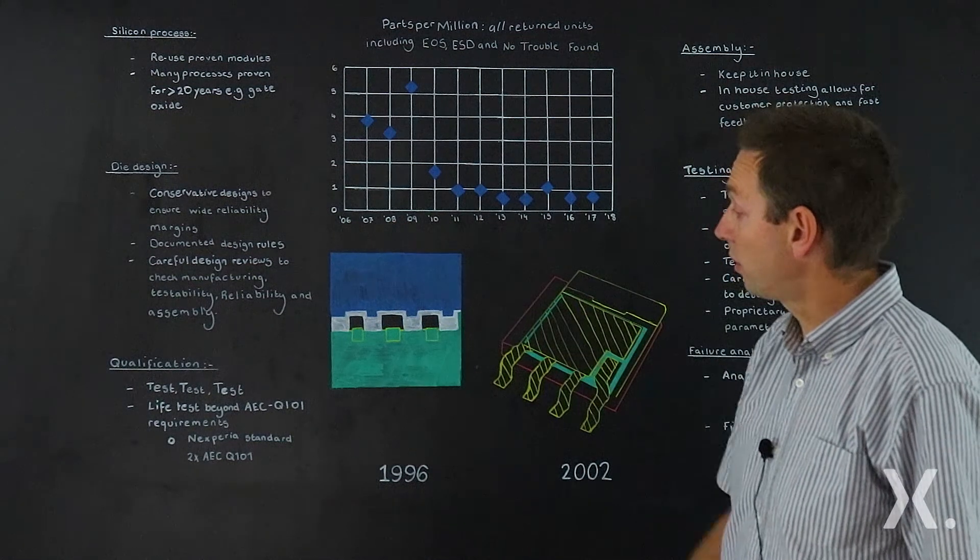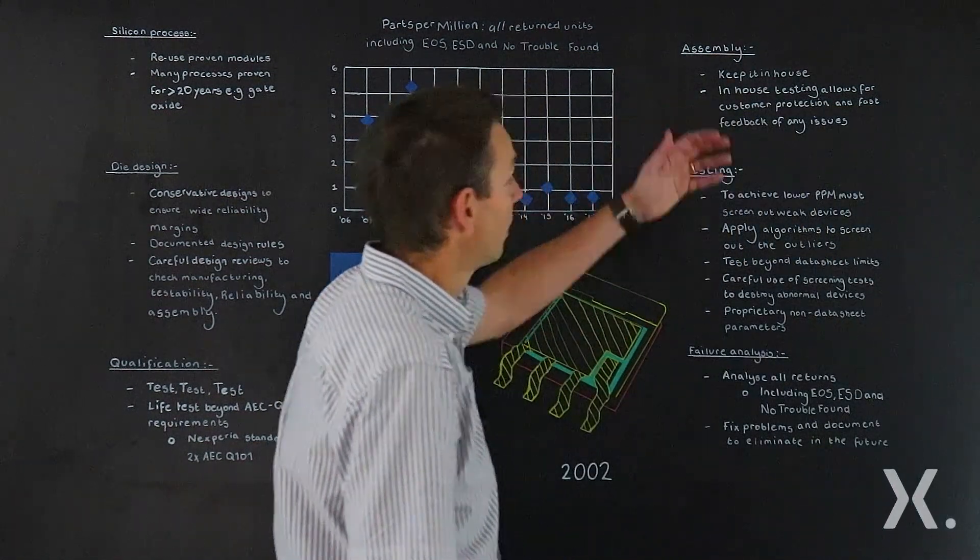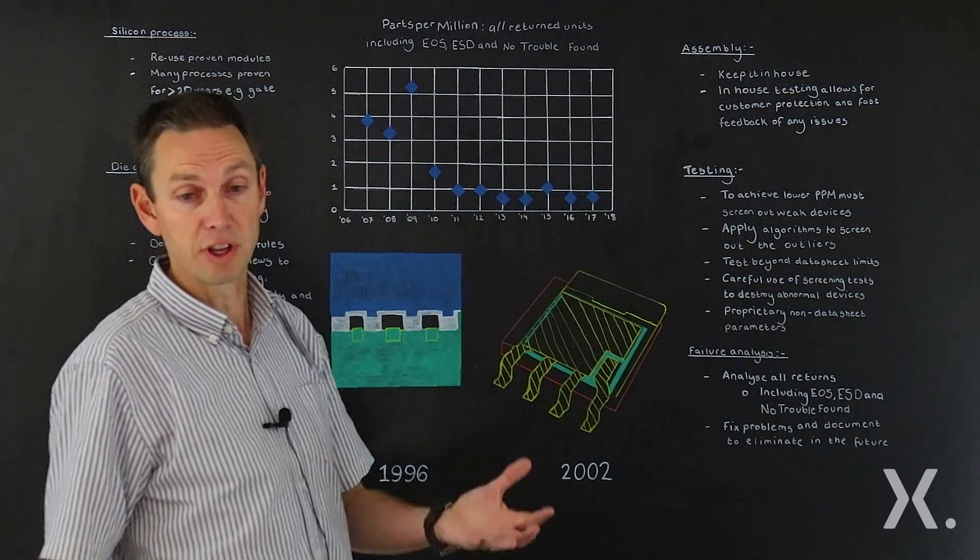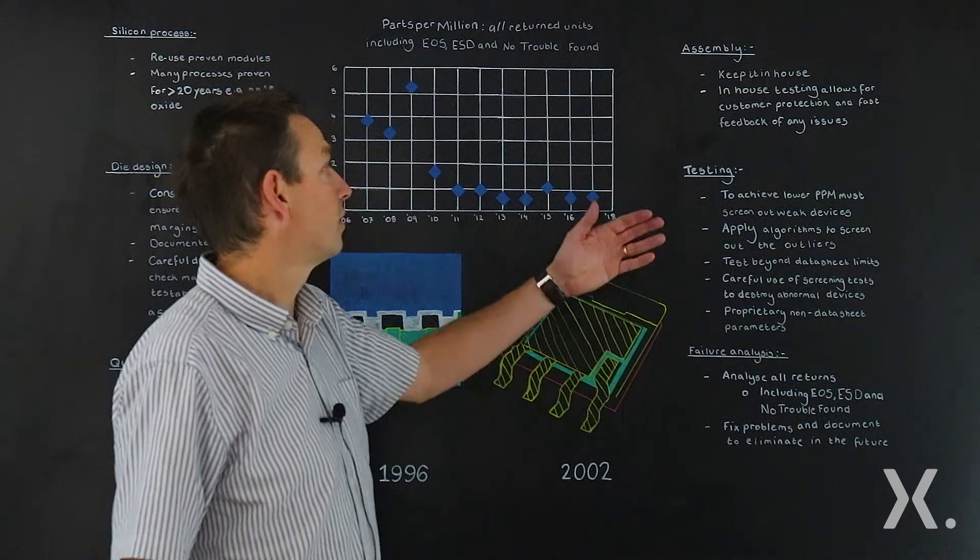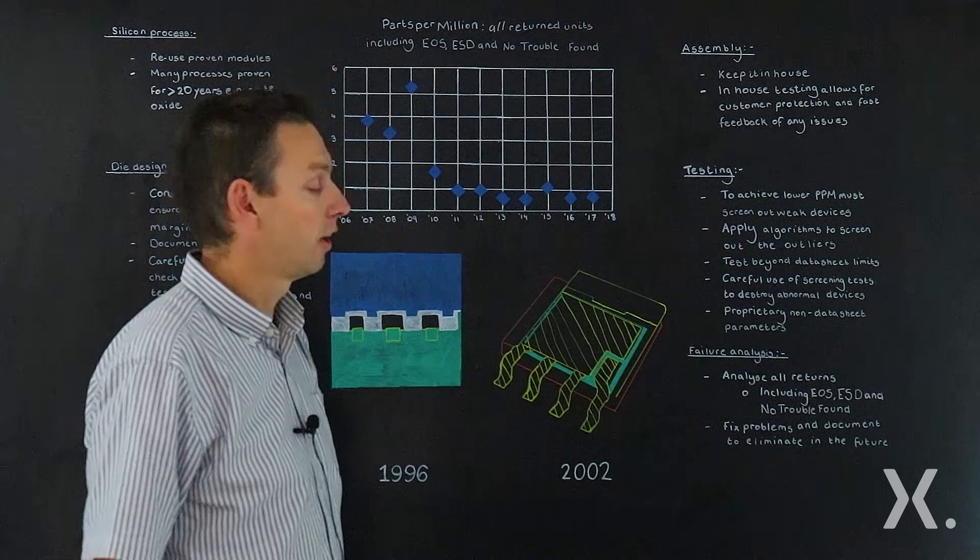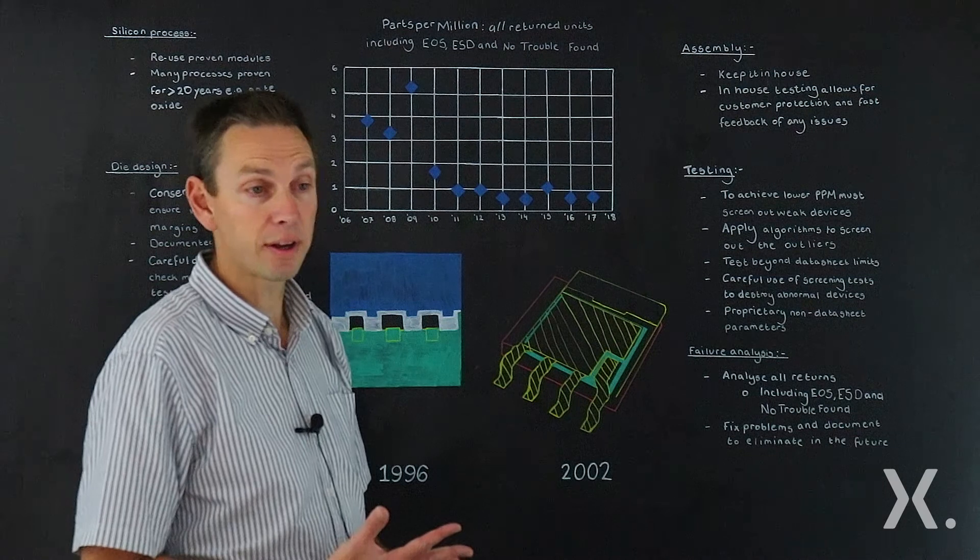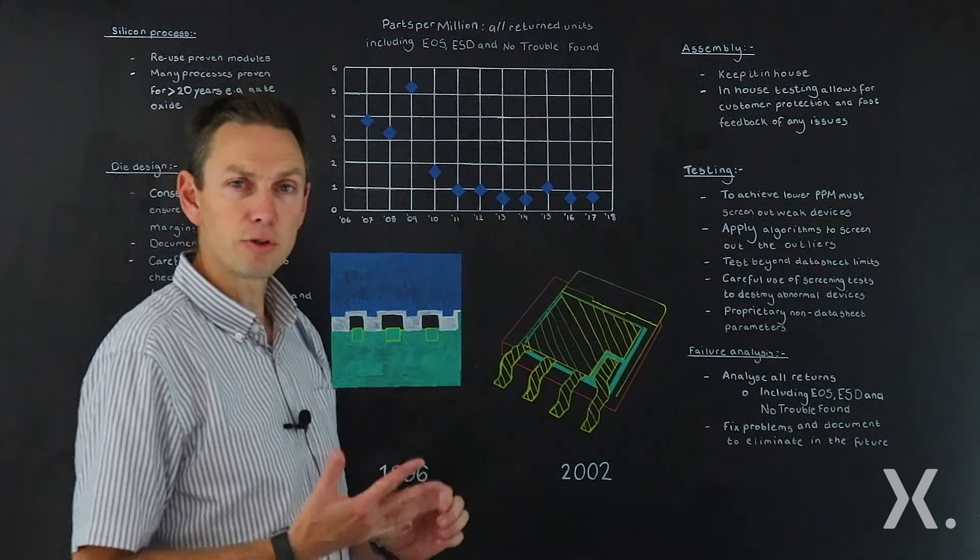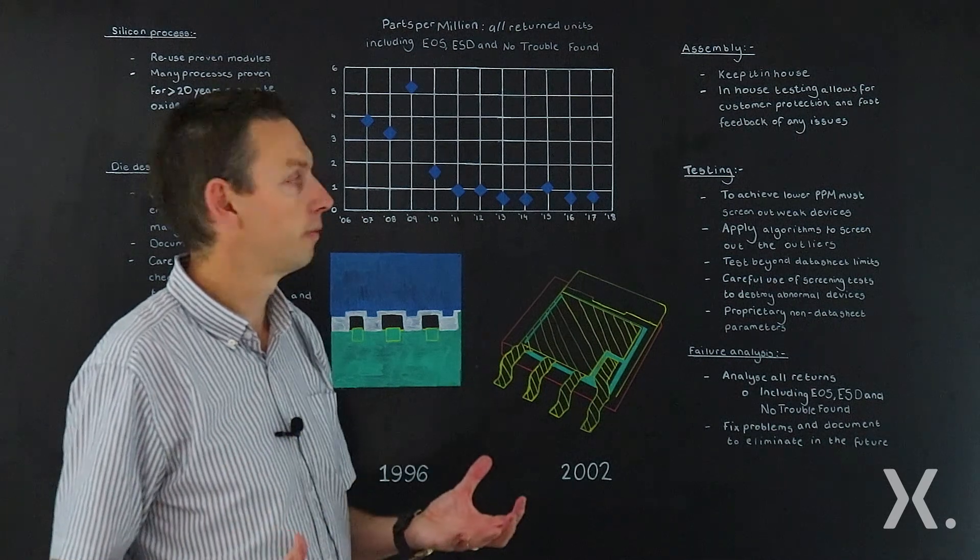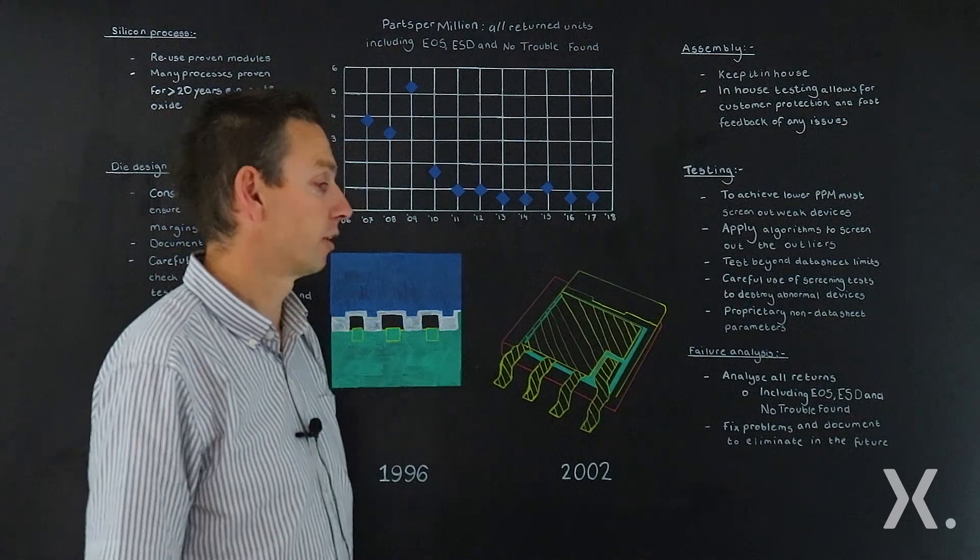We've got the good silicon, we've designed it well. The next part of the process is to get the silicon assembled. So the Nexperia philosophy, for assembly, we've got the choice of doing this in-house or going to subcontractors. To get good reliable MOSFETs, our process has always been to keep this as an in-house process. If we keep the testing and the assembly in-house, we can get very fast feedback of any issues that are coming along, and also the testing and assembly process is the last chance we've got to check that the product is good. This is our last time to check and protect customers, but in-house we can guarantee that we're protecting our customers.